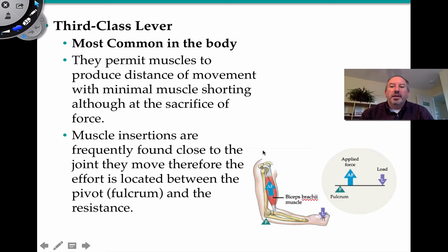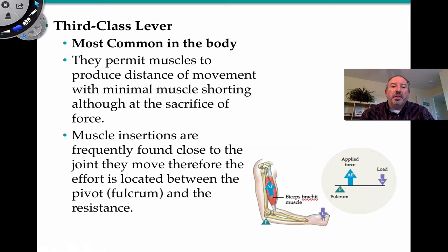The reason the third-class lever is most common in the body is twofold: it permits the muscle to produce distance of movement with minimal muscle shortening, although at a sacrifice of force. Furthermore, muscle insertions — the attachment point on the bone that is moving — are usually found close to the joint, and therefore the effort is located between the fulcrum and the resistance.